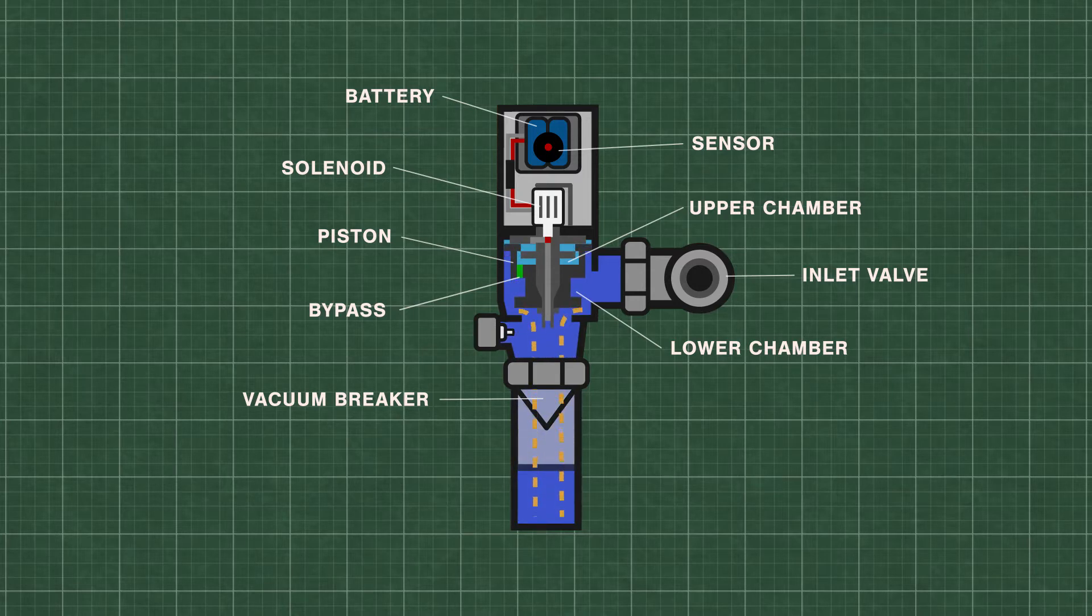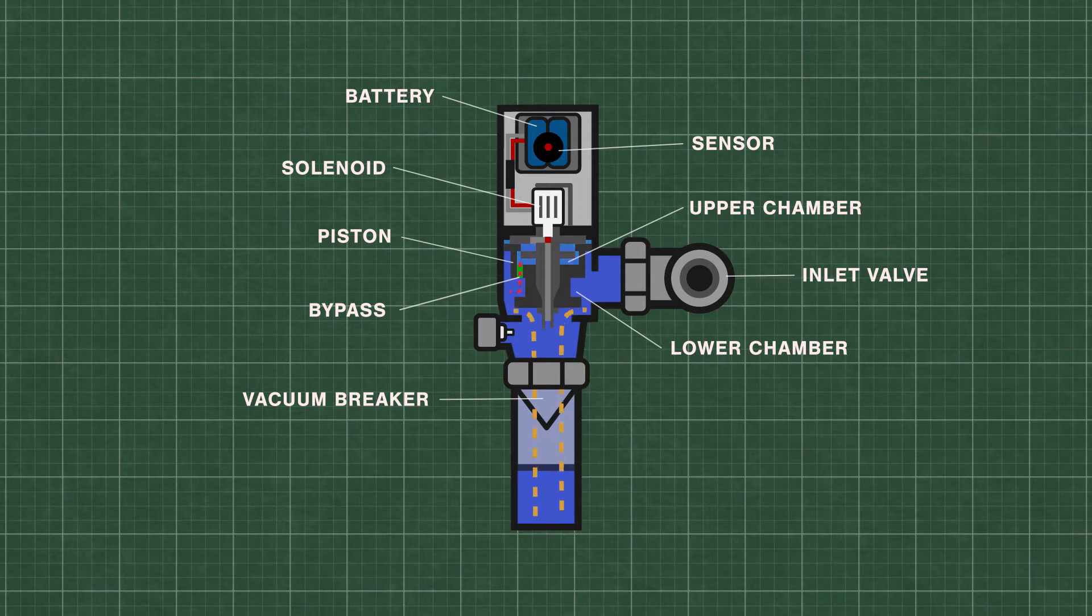During the flush, some of the water is forced back into the upper chamber through a small bypass hole in the piston. The flush continues until the pressure equalizes and pushes the piston down onto the valve seat.